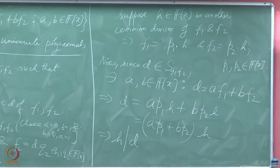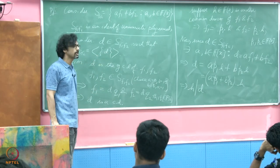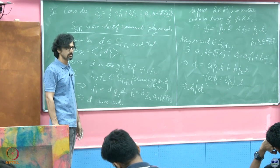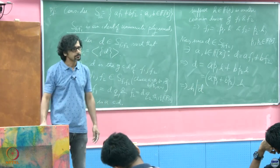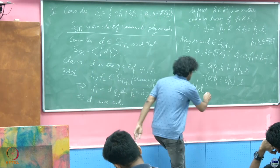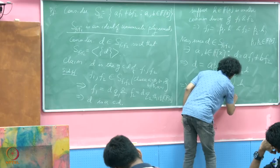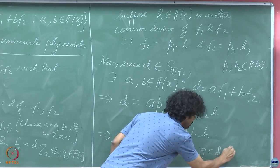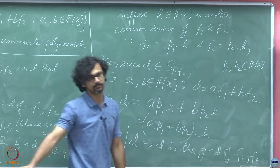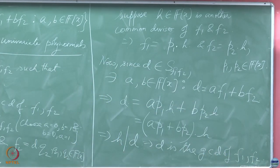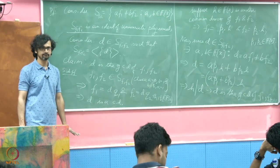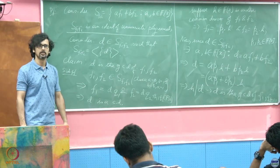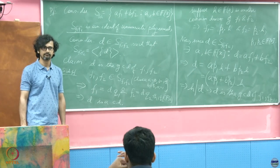So, the common divisor found as the generating element of this ideal is indeed the greatest common divisor. This is the proof of the Aryabhatta-Bezout identity — D is not just a common divisor, D is the GCD of F1 and F2. We have just replicated the steps for GCD of integers that we did earlier.